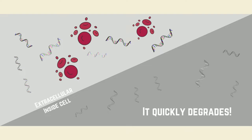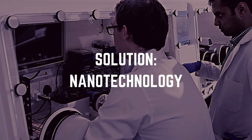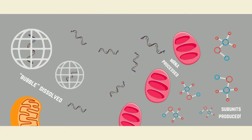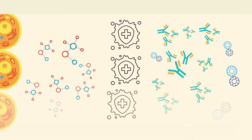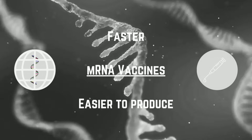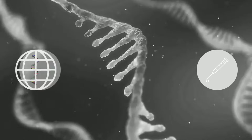The biggest challenge was that mRNA would be taken up by the body and quickly degraded before it could deliver its message and be read into proteins in the cells. The solution came from advances in nanotechnology: the development of lipid nanoparticles that wrap the mRNA like a bubble and allow it to enter the cells. Once inside the cell, the mRNA message could be translated into protein — like the spike protein of SARS-CoV-2 — and the immune system would be primed to recognize the foreign protein, causing the body's immune response to be faster than traditional vaccines and easier to produce.